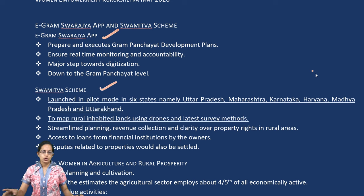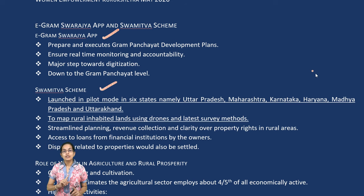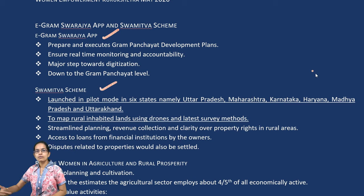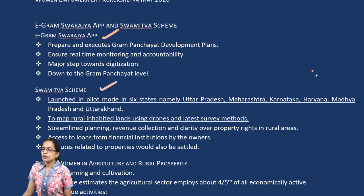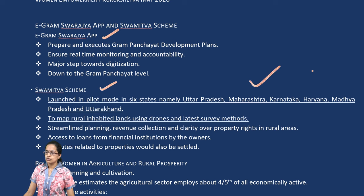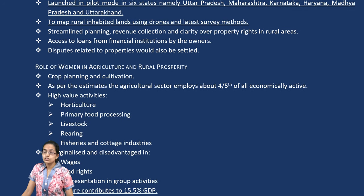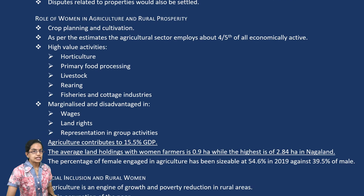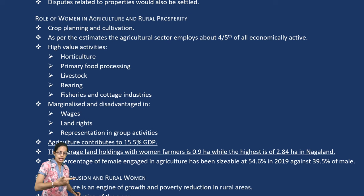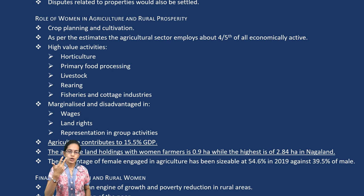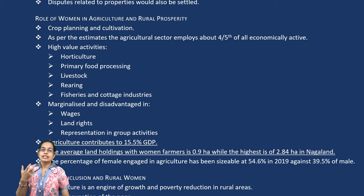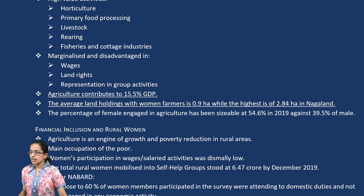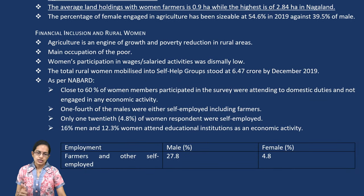States such as Uttar Pradesh, Maharashtra, Karnataka, Haryana, Madhya Pradesh, and Uttarakhand are some of the major states covered under the Swamitva Scheme. Then you have the role of women in agriculture — it varies from horticulture to livestock rearing, fisheries, and aquaculture.